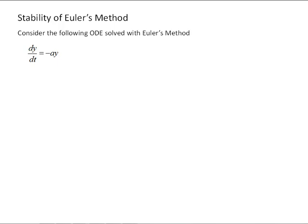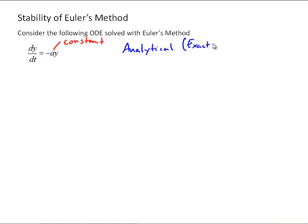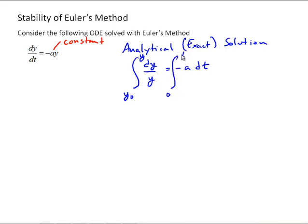To get more insight into stability, let's look at applying Euler's method to the first order differential equation dy/dt = -a·y, where a is a constant. Starting with the analytical solution via separation of variables: dy/y = -a·dt. Integrating both sides from y0 to y, and from 0 to t, we get the natural log of y over y0 equals -a·t, which gives us y = y0·e^(-at).